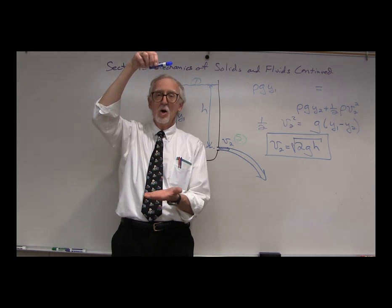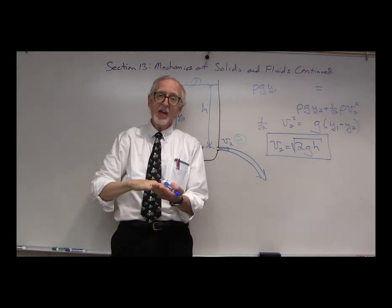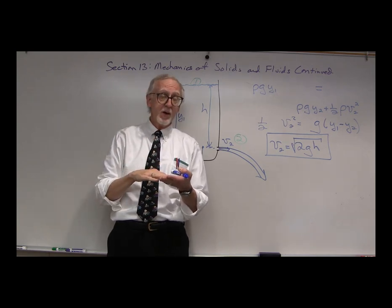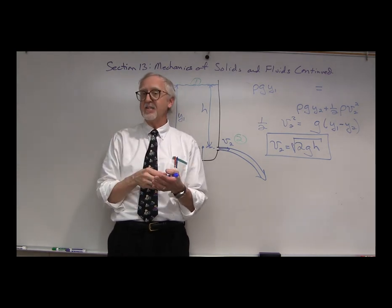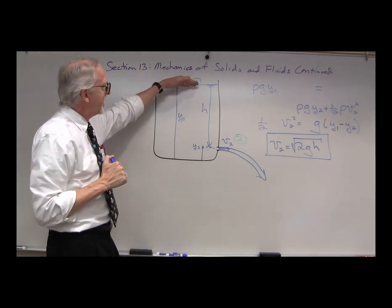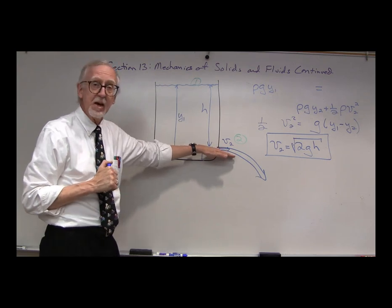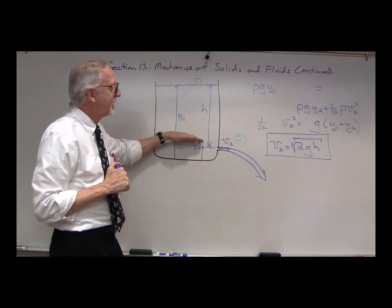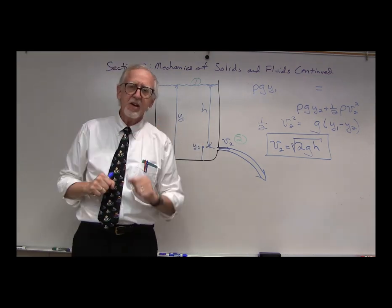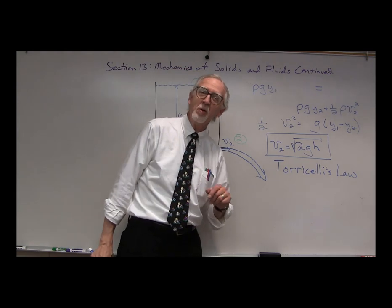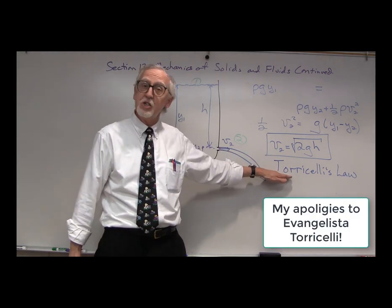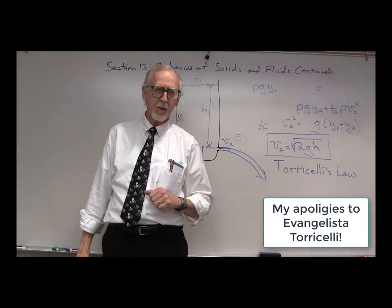v2 equals the square root of 2gh — you might recognize that as the velocity of an object that has fallen a distance h from rest. From conservation of energy, mgh equals one-half mv squared, giving exactly v equals root 2gh. So we can think of this water as coming out with the velocity it would have if it had just fallen a complete distance h. That result is called Torricelli's Law. Now let's take a look at another application.